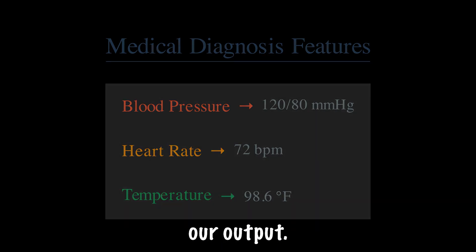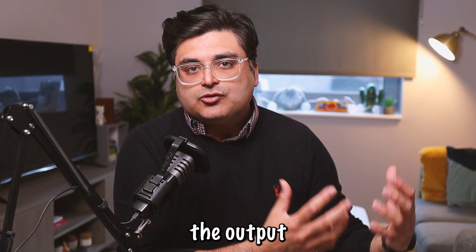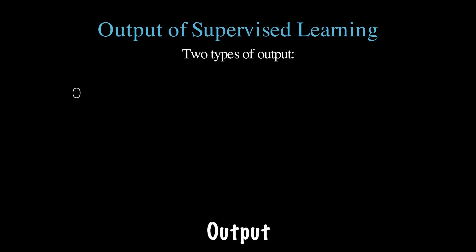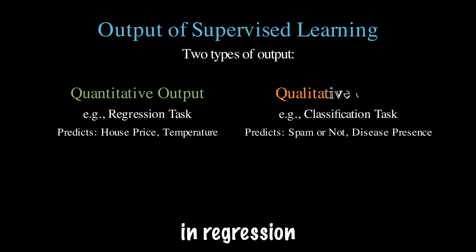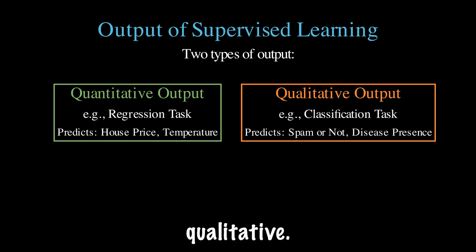Second, we have our output — these are the values we are predicting, and they come in two forms. The output could be quantitative, for example in regression tasks. Or the output could be qualitative, for example in classification tasks.